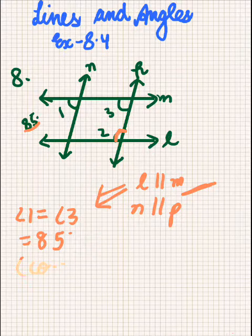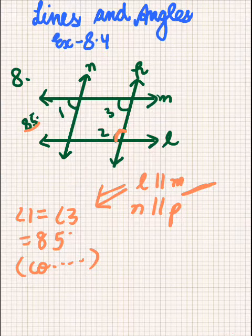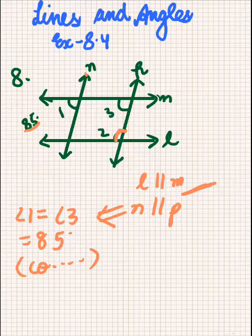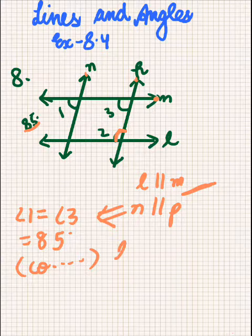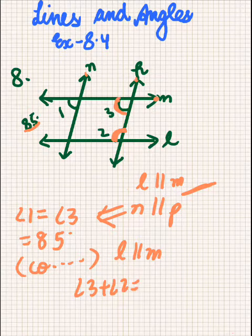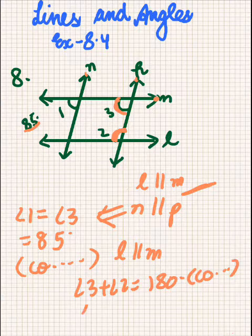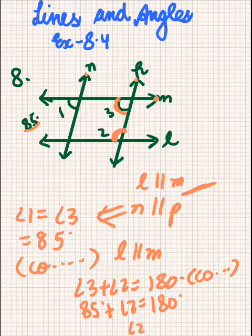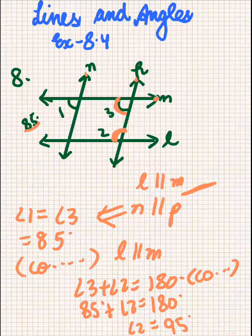Since L is parallel to M, angle 3 plus angle 2 will be equal to 180 degrees because these are co-interior angles. We know angle 3 is 85 degrees, so 85 plus angle 2 equals 180 degrees. Therefore angle 2 equals 95 degrees. So we have found angle 2 to be 95 degrees.